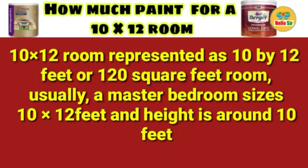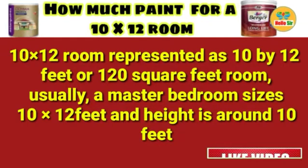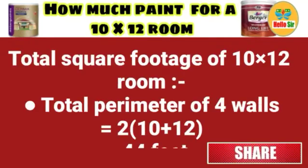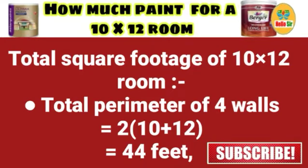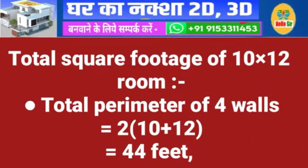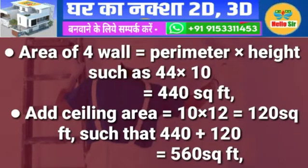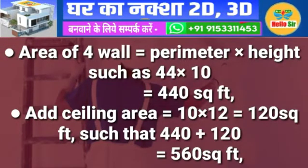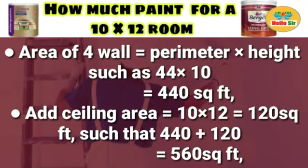The room is represented as 10 x 12 feet, or 120 sq ft. Usually a master bedroom size is 10 x 12 feet and the height is around 10 feet. To find the total square footage, first calculate the total perimeter of the 4 walls: 2 x (10 + 12) = 44 feet. Then, area of 4 walls equals perimeter x height, such as 44 x 10, which comes out to 440 sq ft.